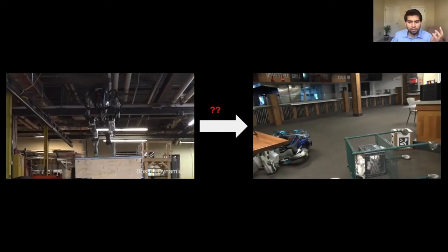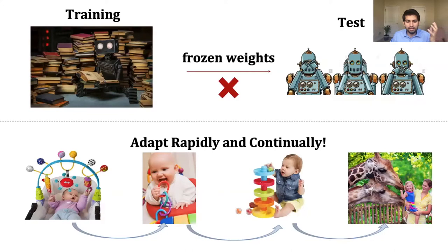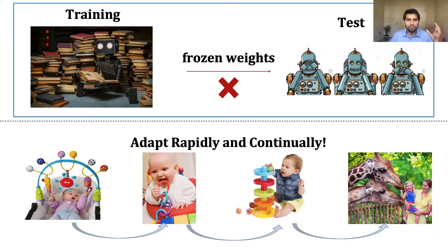The question is how do we generalize beyond what the agent is trained for? I argue we should move away from the current paradigm of training, freezing weights, then testing and hoping things work out. Research in my group takes inspiration from nature, where almost all biological agents adapt continuously and rapidly throughout their life on their own. How do we go from this train-versus-test paradigm to a continual adaptation loop that we see in nature?